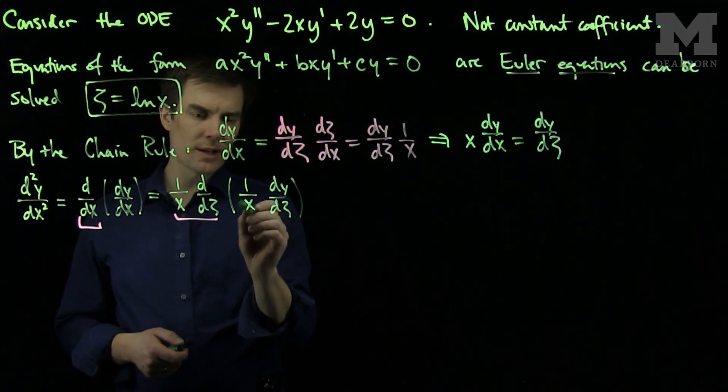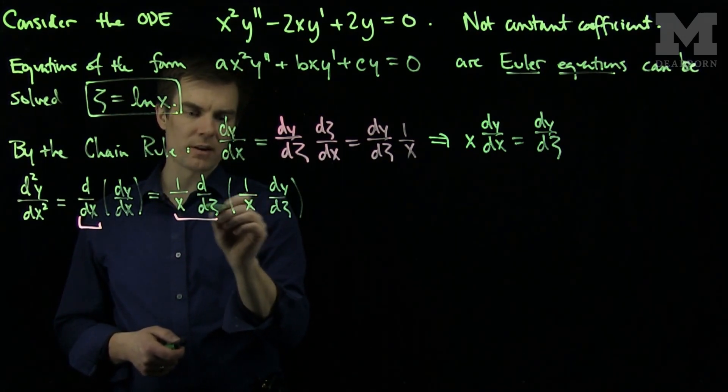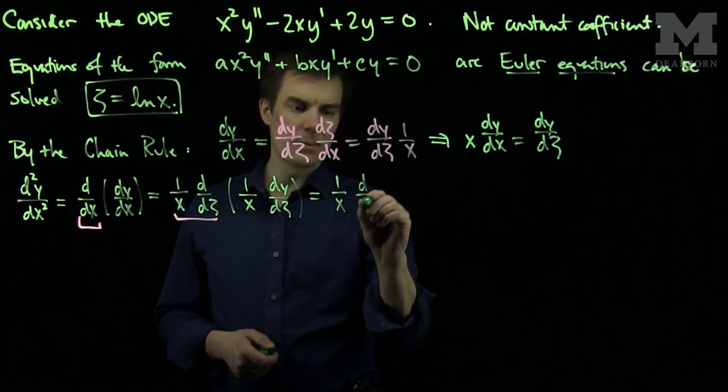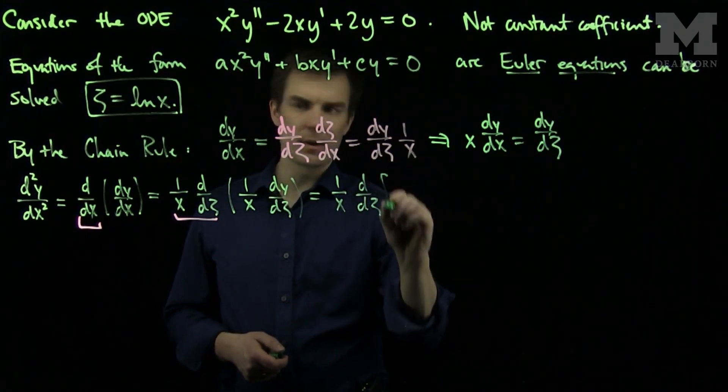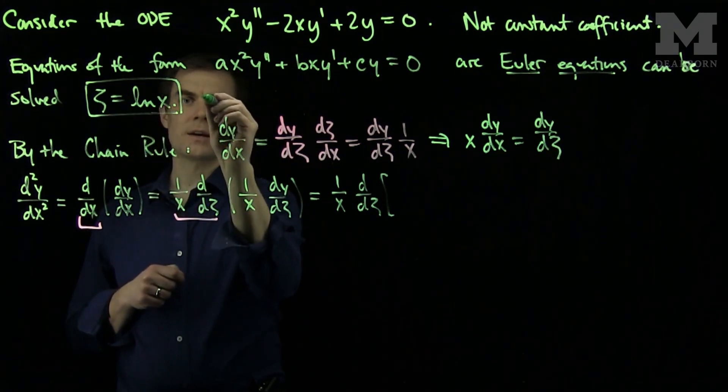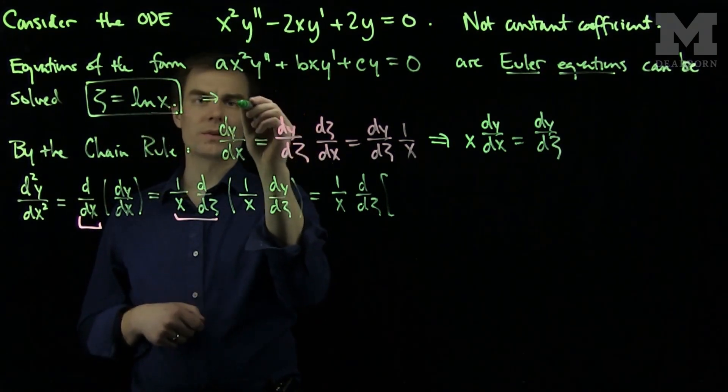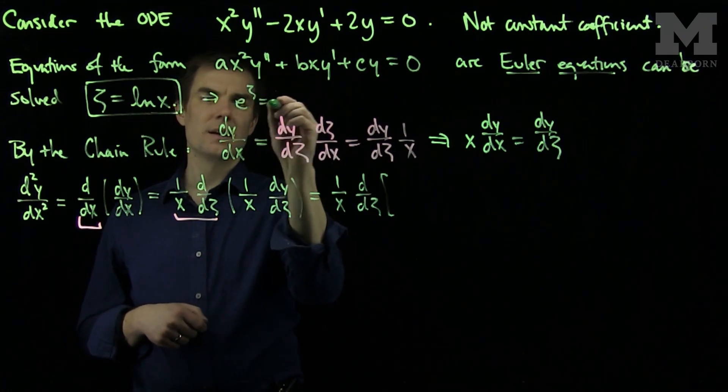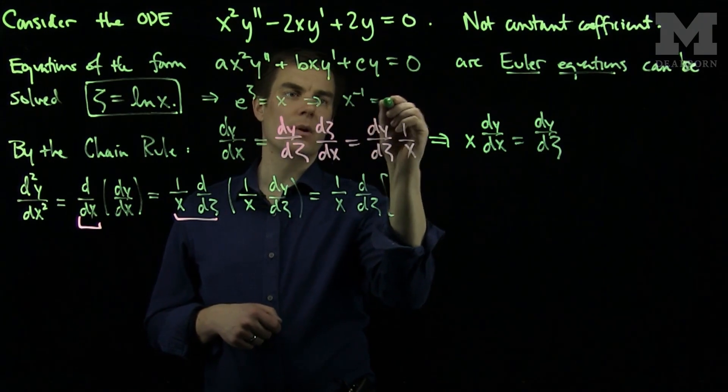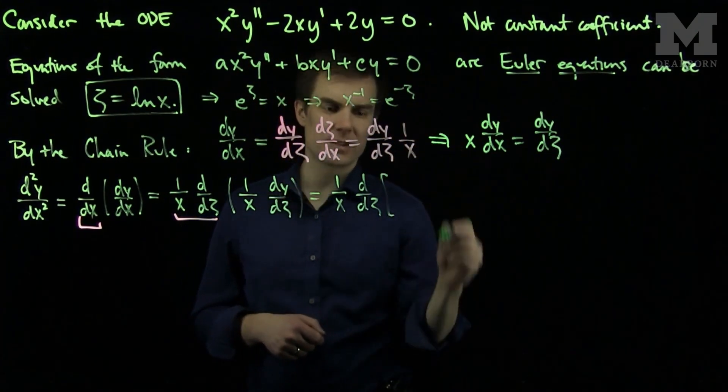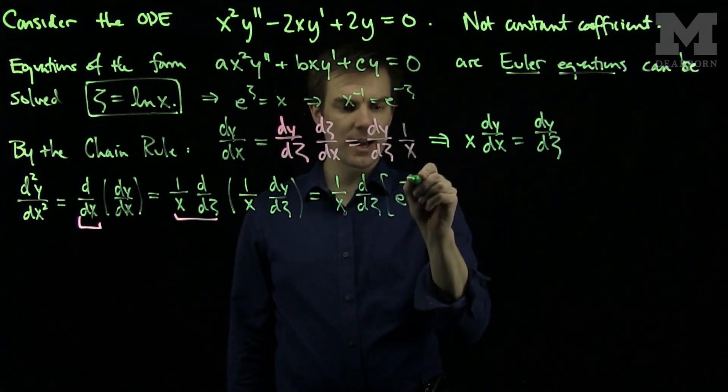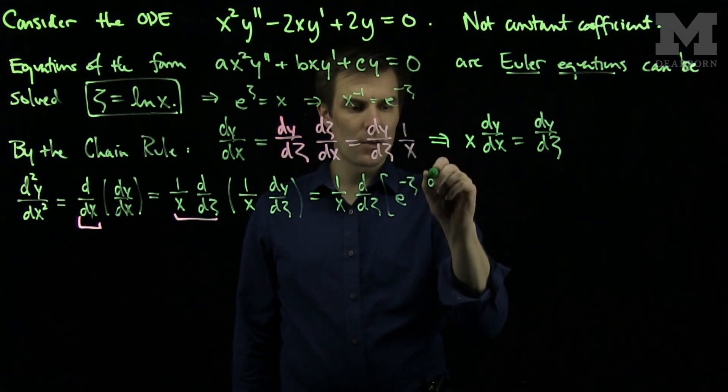And now we need to replace this x with the corresponding zeta variable so I can do the derivative. So we see this is 1 over x d by d zeta. And we know that x is given by this formula that the log of x is zeta. So this equation is also equivalent to saying that e to the zeta is equal to x and that x to the negative 1 power is e to the negative zeta. So this 1 over x can be replaced with e to the negative zeta dy dx.